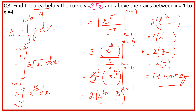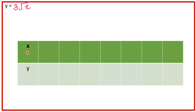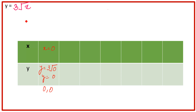Graph के लिए पहले एक table बनाना होगा। हम values लगाएंगे। x = 0 तो y = 3√0 = 0। Note करें: last question में हम minus values से शुरू करते थे, लेकिन यहाँ अगर x negative हो तो √x imaginary (iota) आ जाता है — इसलिए हम 0 से start करते हैं, क्योंकि हमारी limit 1 to 4 है।